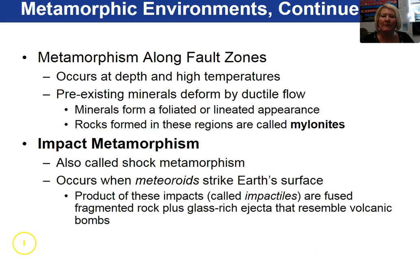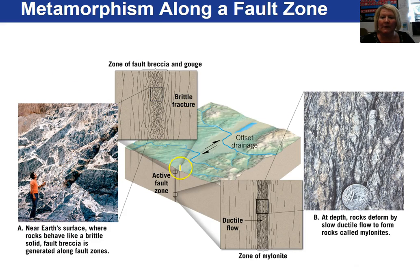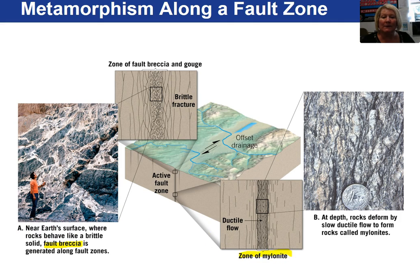A couple of other metamorphic environments are metamorphism along a fault and impact metamorphism. Near the earth's surface where rock is cold, crumbling of rock along a fault is referred to as fault breccia. Deeper in the earth where rocks are warm, rather than brittle behavior, we get ductile behavior and the rock is called a mylonite.